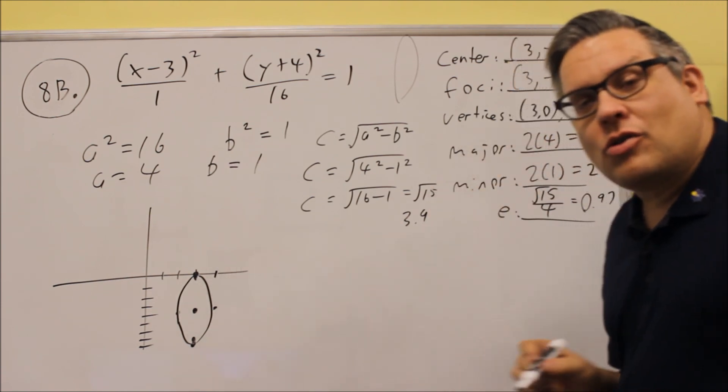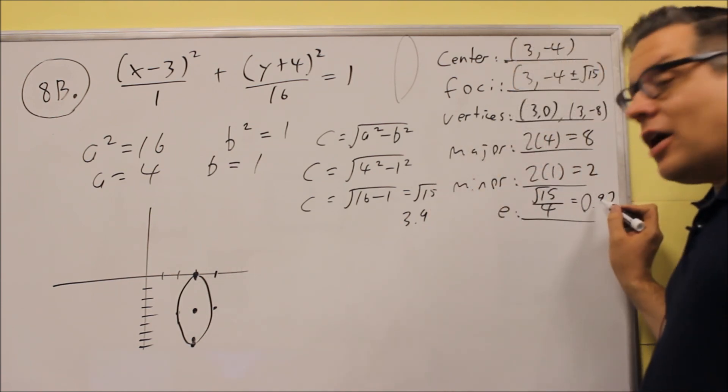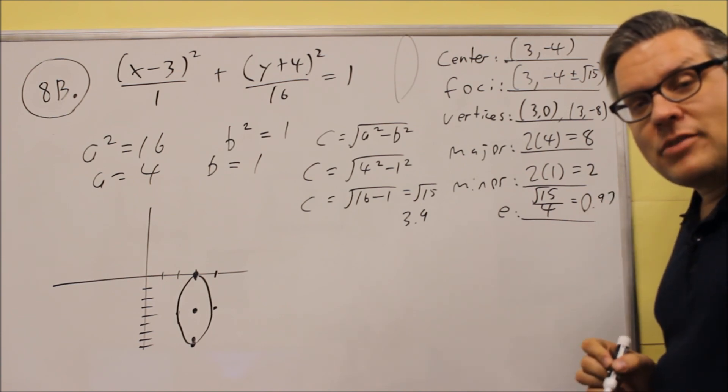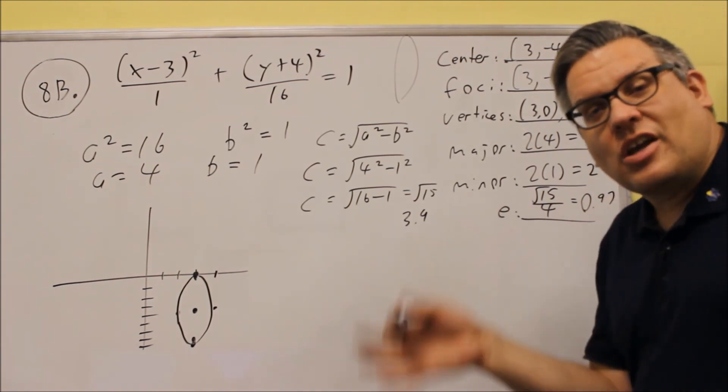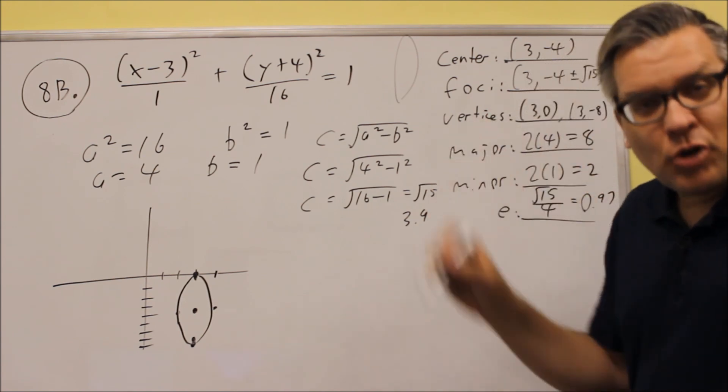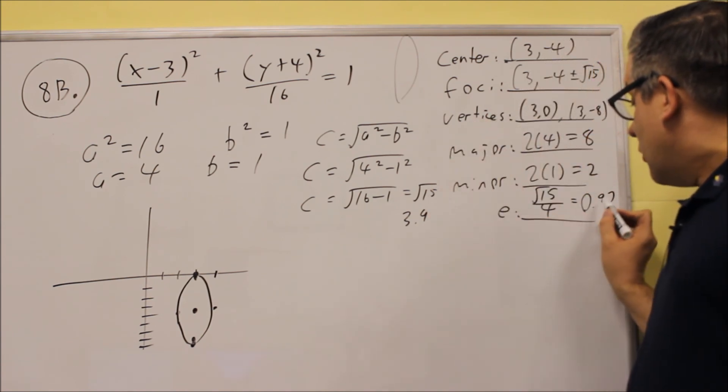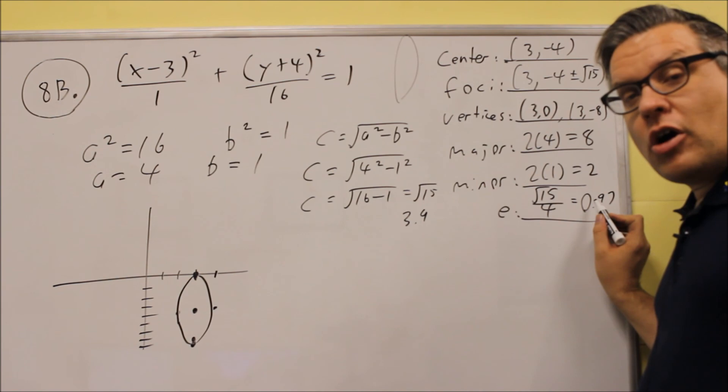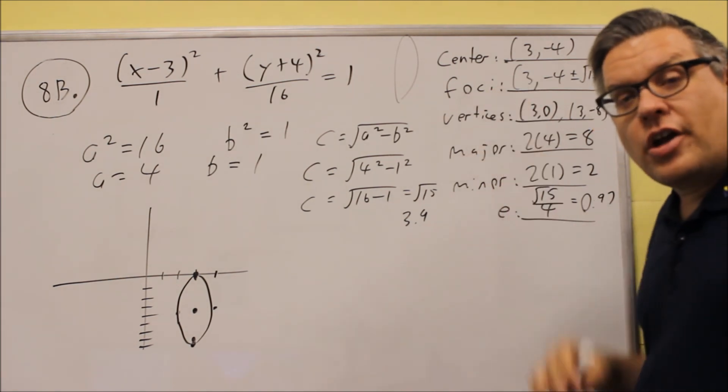So this one's pretty narrow, and so that's why we have a value for e that's so far away from 1, or so far away from 0, because if you have e equals 0, that's a perfect circle. And so this, the farther you are away from 0, then the more elongated it looks.